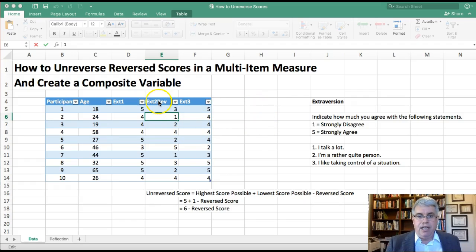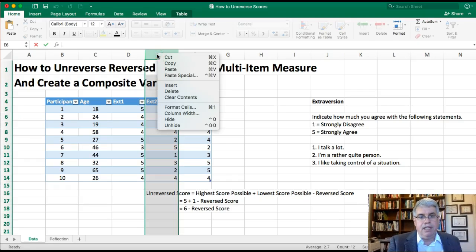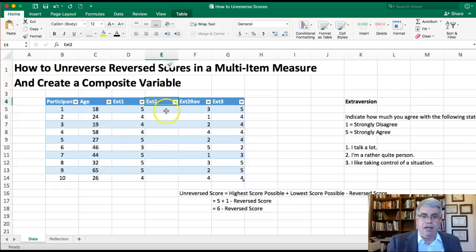Now what we need to do is we need to get the reverse scores unreversed. And what we're going to do is we're going to insert a column into our table. So I'm going to two-finger click on column E and left-click and I'm going to press insert. And that inserted a new column into our table, and Excel read our mind. It knew that we were going to call it EXT 2.